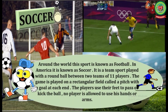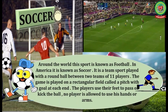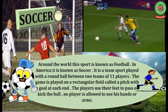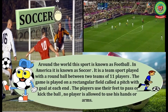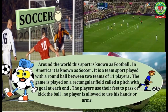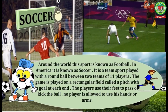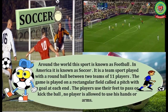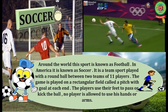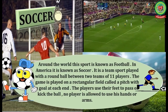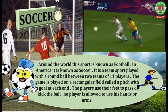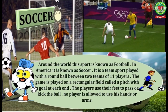Number three is soccer. Around the world the sport is known as football; in America it is known as soccer. It is a team sport played with a round ball between two teams of eleven players. The game is played on a rectangular field called a pitch, with a goal at each end. The players use their feet to pass or kick the ball; no player is allowed to use his hands or arms.